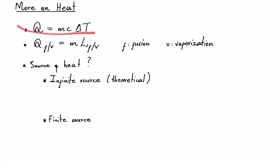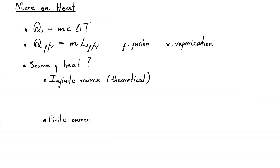This was the equation we ended up with — the heat equation. That's the heat supplied or extracted, the mass of the object on which heat is supplied or from which heat is extracted, the specific heat capacity which is the property of the object, and the temperature change the object will undergo when such an amount of heat is supplied.